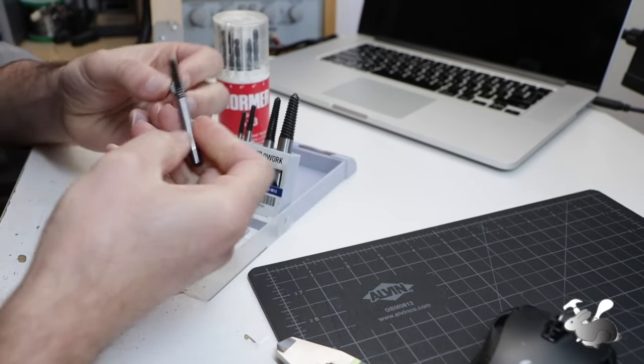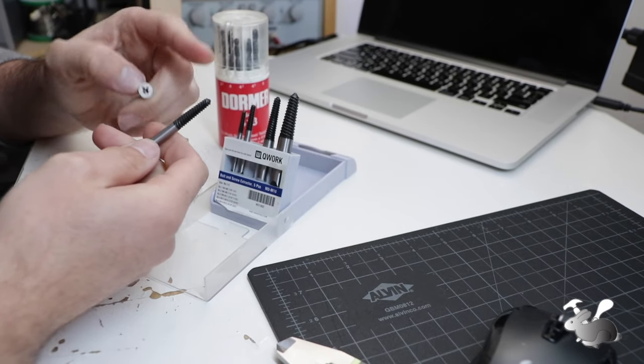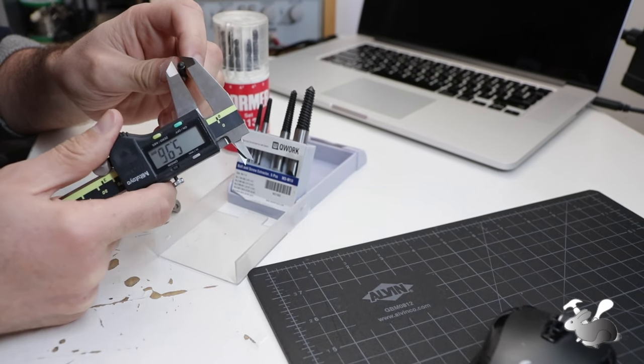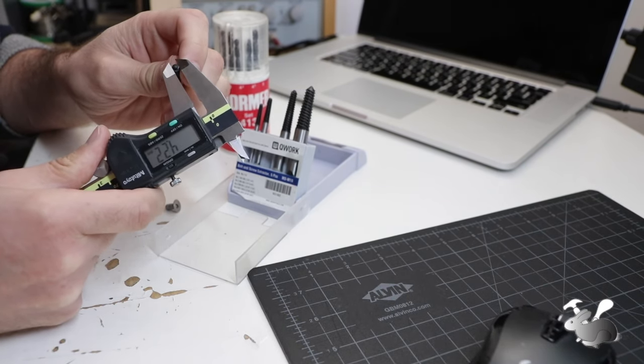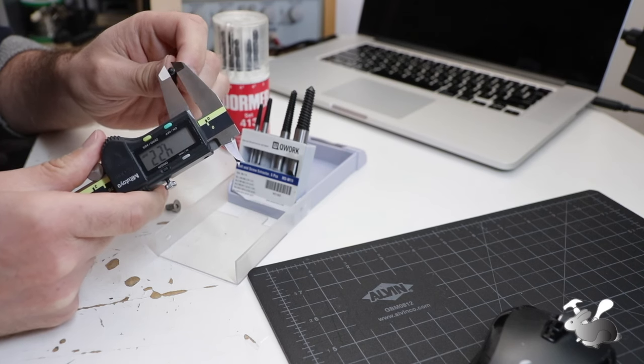Next, what we have to do is match the screw extractor with the proper drill bit. Measure the tip diameter here, and the tip diameter is about 4.22 millimeters.